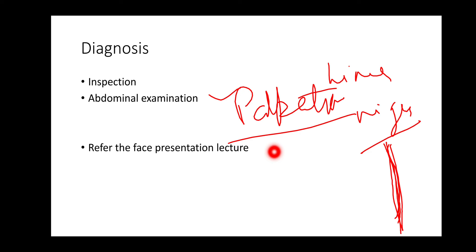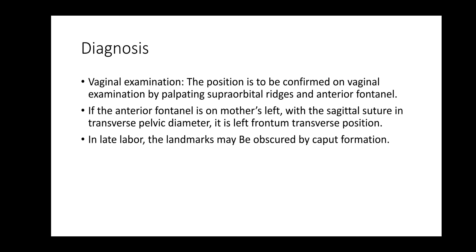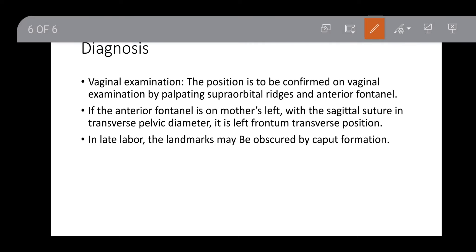Next, if labor progresses, we will do vaginal examination. On vaginal examination, the supraorbital ridges are felt and the anterior fontanelle should be felt. If the occiput is on the right plane at the back, then the position would be left fronto-anterior or left fronto-transverse position.